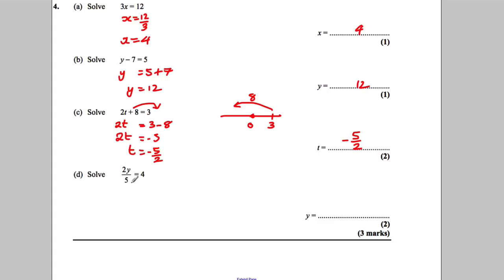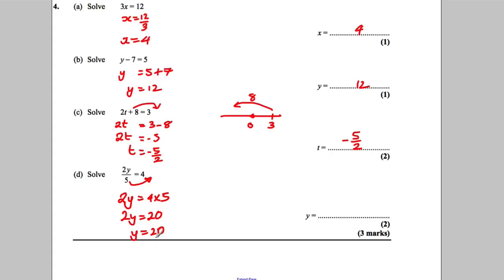This one looks a bit complicated. We want to find Y. 2Y divided by 5 is equal to 4. So what we can do is multiply both sides by 5. 2Y is 4 multiplied by 5. 2Y therefore must be 20. But we want to find 1Y, so we divide by 2. Y is 20 over 2. Y is 10. Check: 2 multiplied by 10 is 20, 20 divided by 5 is indeed 4.